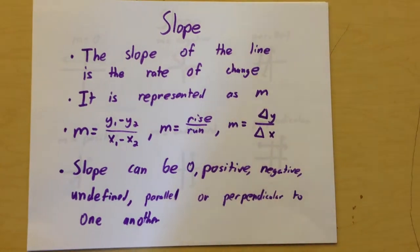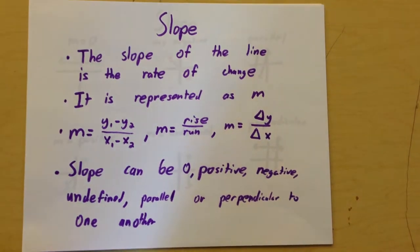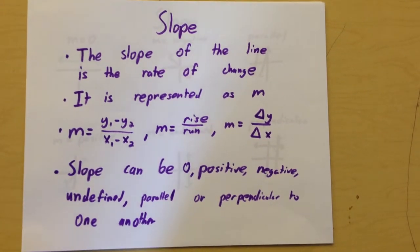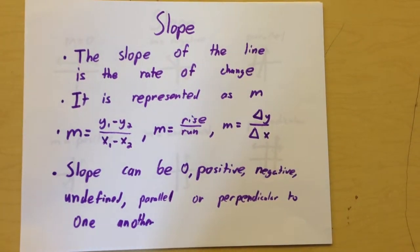The slope of the line is the rate at which the line changes. It is represented by M. M can be found in a variety of different ways. You can find it by taking two points and doing Y1 minus Y2 over X1 minus X2.